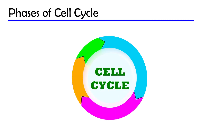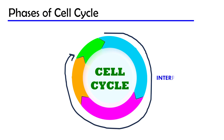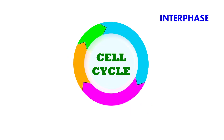The cell cycle is broadly divided into two phases: first is interphase and second is the M phase, that is the mitotic phase. Interphase is also called the preparatory phase because in this phase the cell prepares itself for division, while in the M phase the cell finally divides.